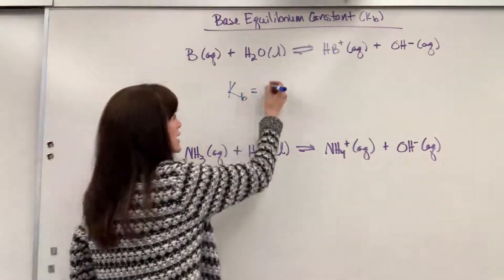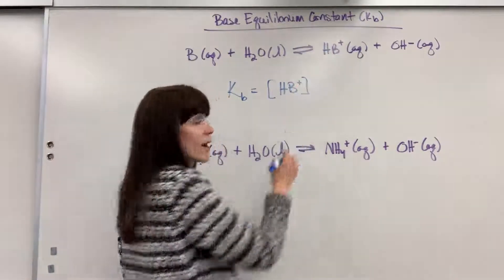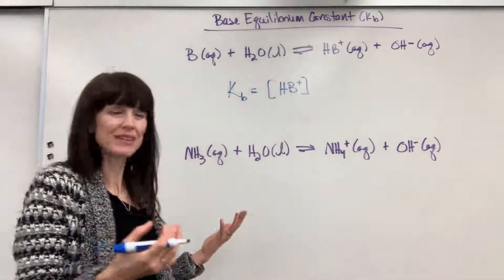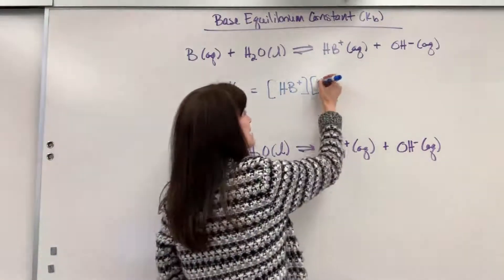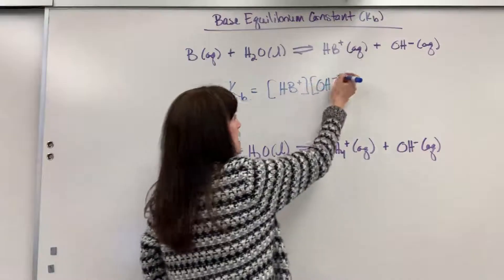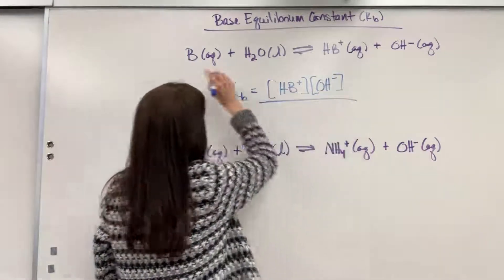So let's take our products. We're going to have this HB with a positive charge raised to the 1 power, understood to be a 1, so I'll leave it blank. The reader will know that's a 1 exponent. Times—remember that's a multiply—the concentration of hydroxide, divided by the reactants.